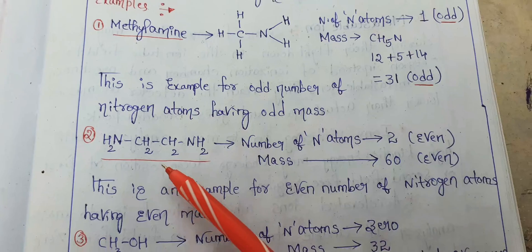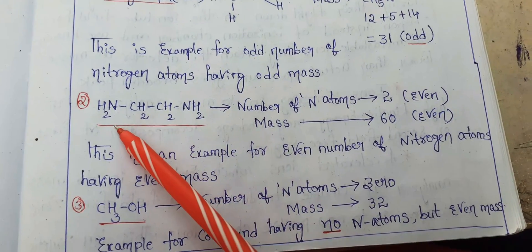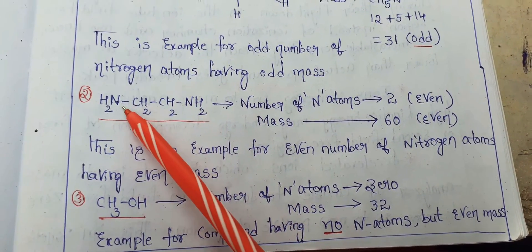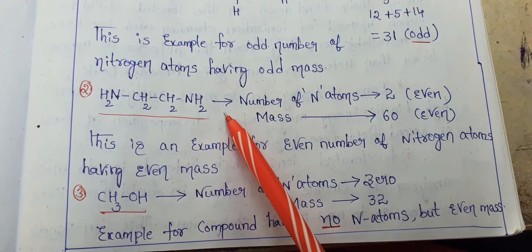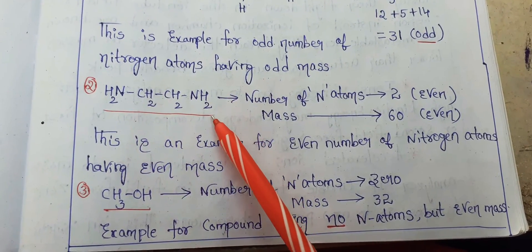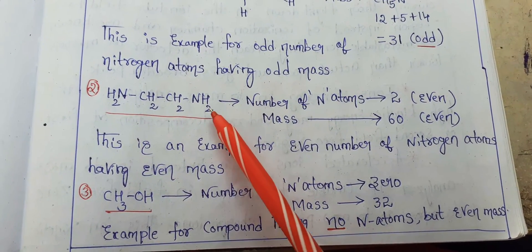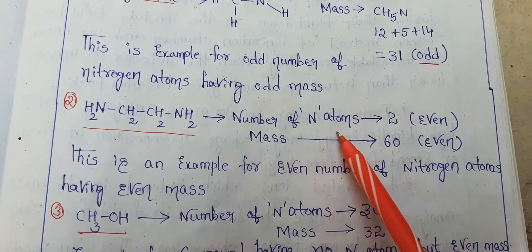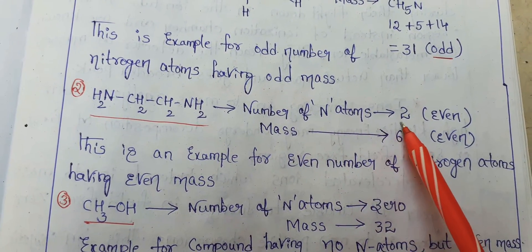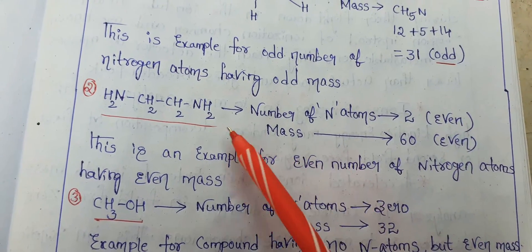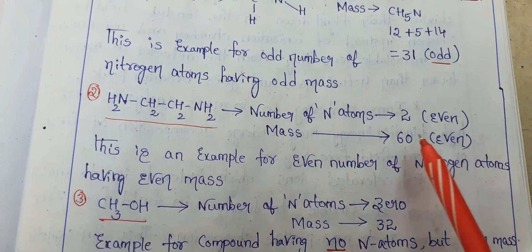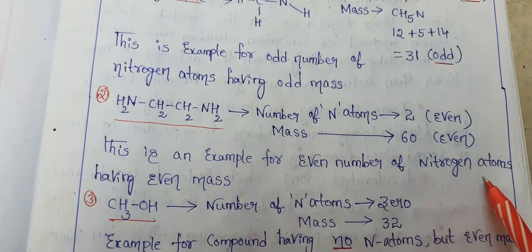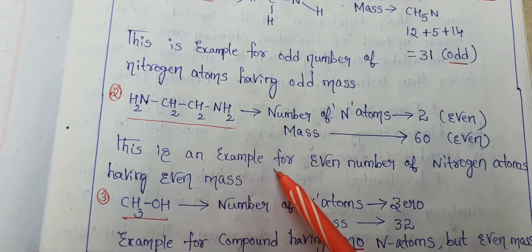Let us take a second example. First, we count the number of nitrogen atoms. In this molecule, two nitrogen atoms are present, which means an even number of nitrogen atoms are present, so we will get even mass. The number of nitrogen atoms is 2, so even. If we find the mass here, we get 60. This is an example of an even number of nitrogen atoms giving an even mass.